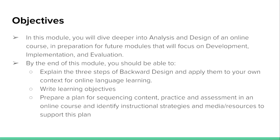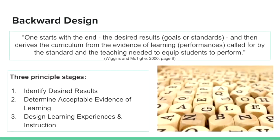Let's jump into backward design. Here is a nice summary definition: one starts with the end — the desired results, goals, or standards — and then derives the curriculum from the evidence of learning called for by the standard and the teaching needed to equip students to perform. There are three principal stages: first, identify the desired results; then, determine the acceptable evidence of learning; and finally, design your learning experiences and instruction.